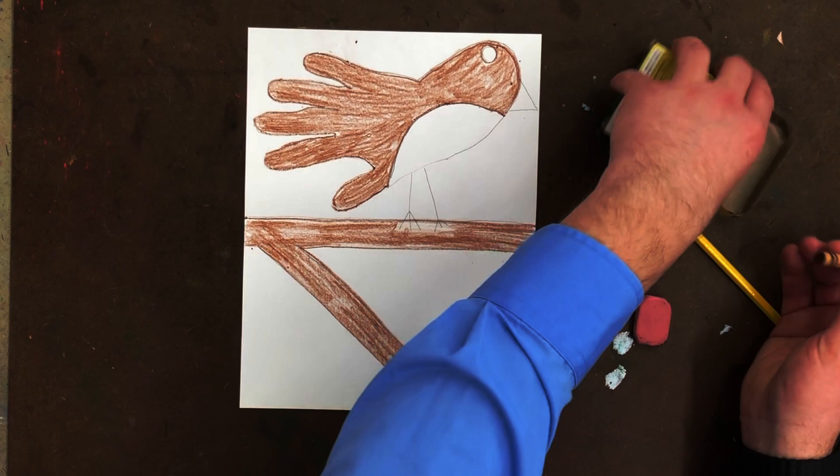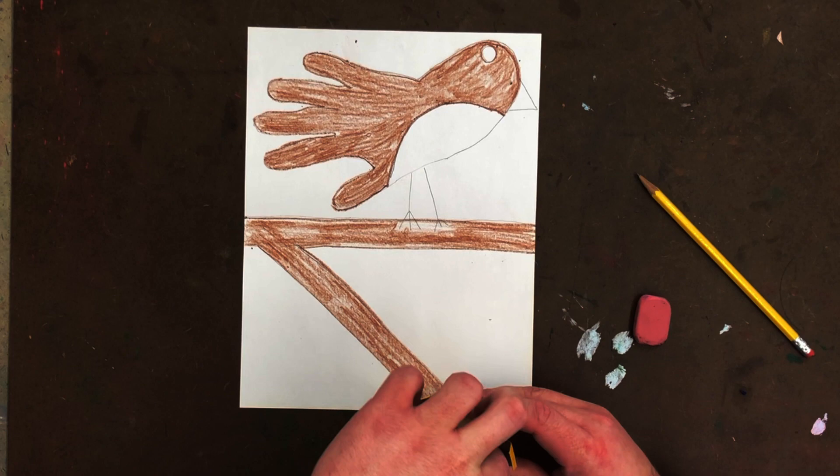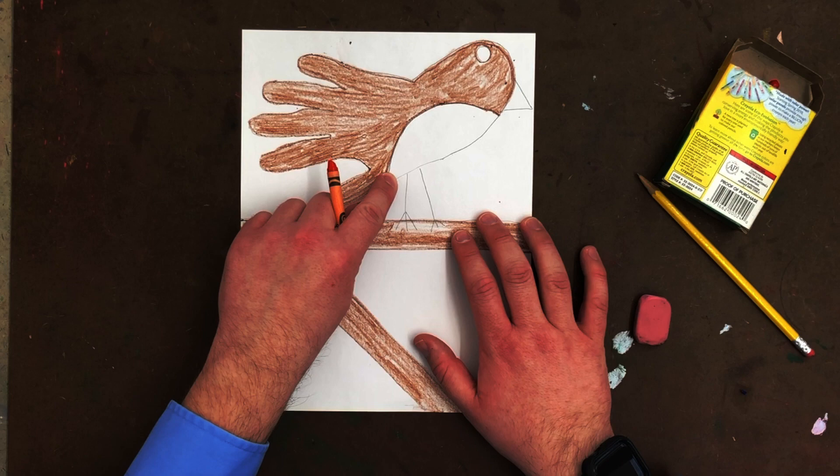Next, I need in your crayon set, usually there is a red orange color. Find mine. Here it is red orange. We don't want orange. We don't quite want red. We want something in between. So I got my red orange. And that's the color of the chest of the birds.